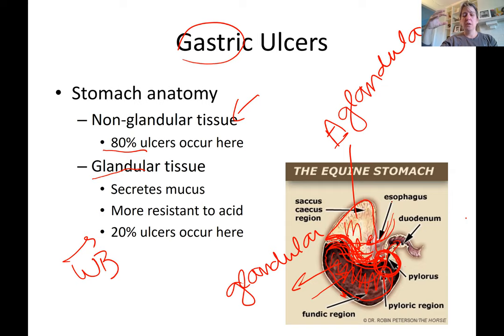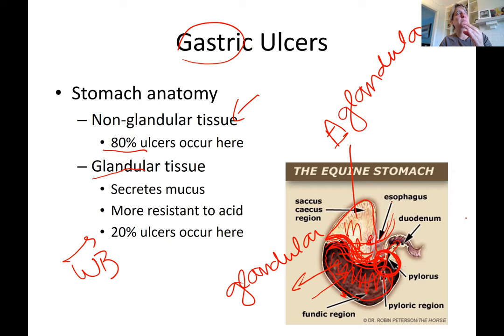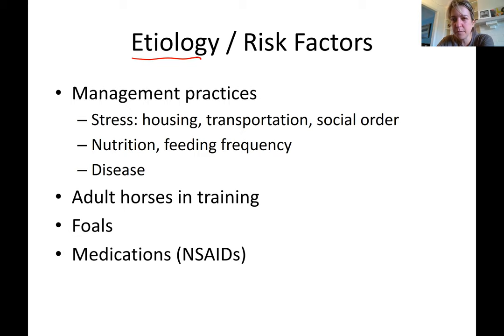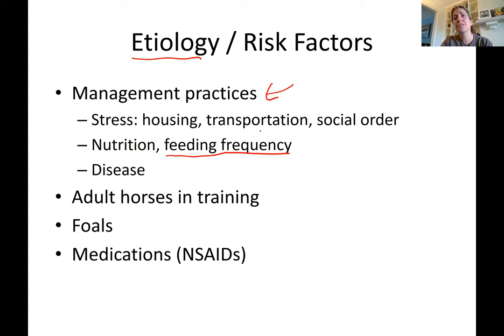The saliva also buffers the stomach — its pH is higher than the acidic stomach environment, helping shift pH toward neutral. So if the stomach is empty and the horse is just standing around, there's abundant acidic gastric juice, no saliva to buffer, and a completely empty stomach — such as when horses are stabled and haven't received a meal in six or seven hours. That's why management practices are a major factor in ulceration.